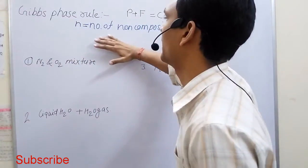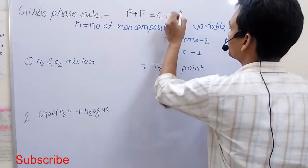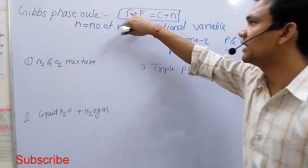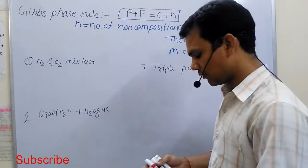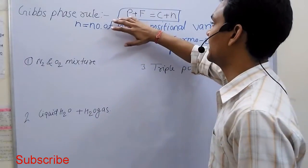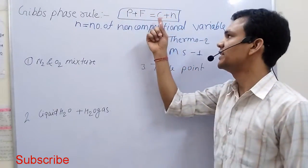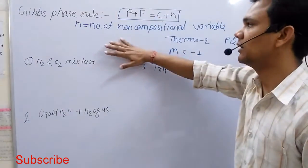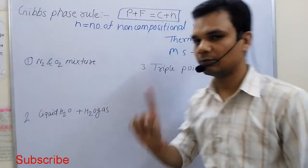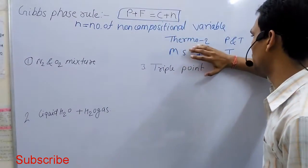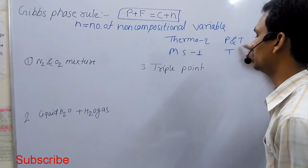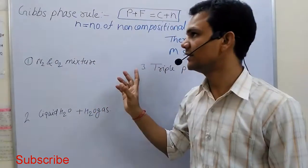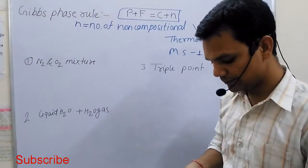About Gibbs Phase Rule: the formula is P plus F equals C plus N, where P stands for number of phases (solid, liquid, gas), F stands for degrees of freedom, C stands for number of chemical components, and N stands for number of non-compositional variables. In thermodynamics, N refers to pressure and temperature, while in material science it is only temperature.